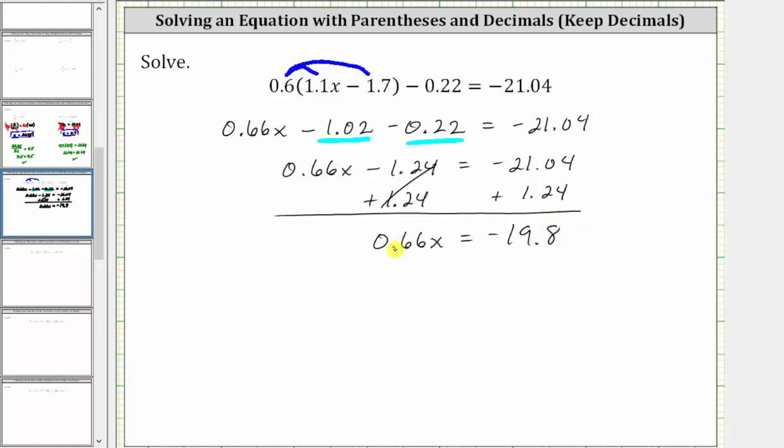And now for the last step, since 0.66x means 0.66 times x, to undo the multiplication and solve for x, we now divide both sides by 0.66.